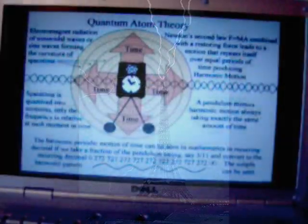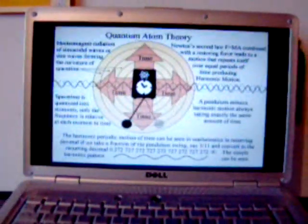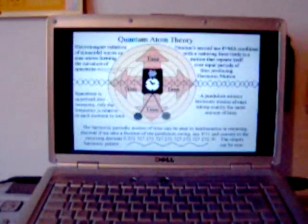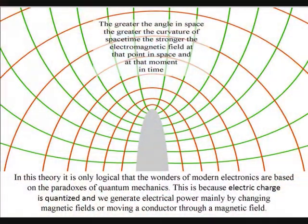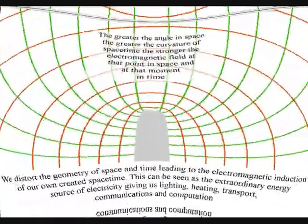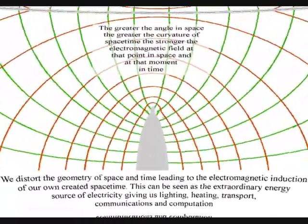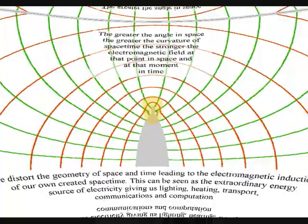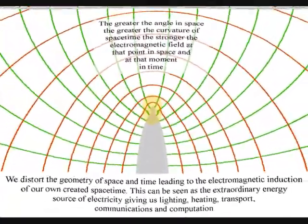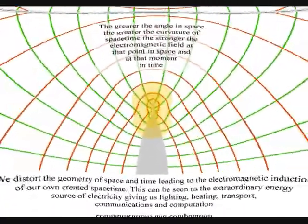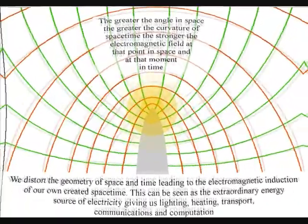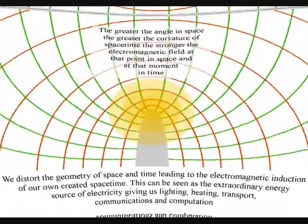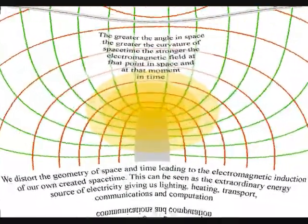In this theory, it is only logical that the wonders of modern electronics are based on the paradoxes of quantum mechanics. This is because electric charge is quantised, and we generate electric power mainly by changing magnetic fields, or moving a conductor through a magnetic field. This will distort the geometry of space and time, leading to the electromagnetic conduction of our own created space-time, in other words, electricity.